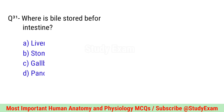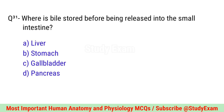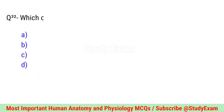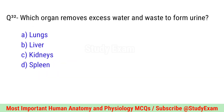Question number thirty-one. Where is the bile stored before being released into the small intestine? Correct option is C. Gallbladder.